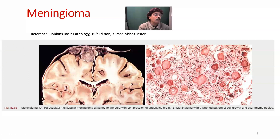If it compresses the optic chiasm, then we may have bitemporal hemianopia or blurring of vision. If the optic nerve itself is involved, visual symptoms may also occur.